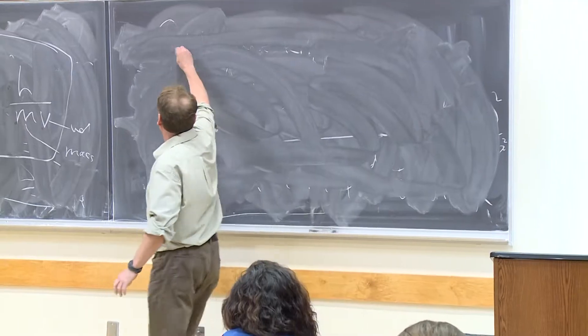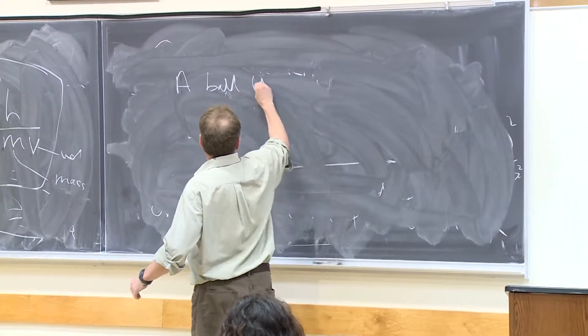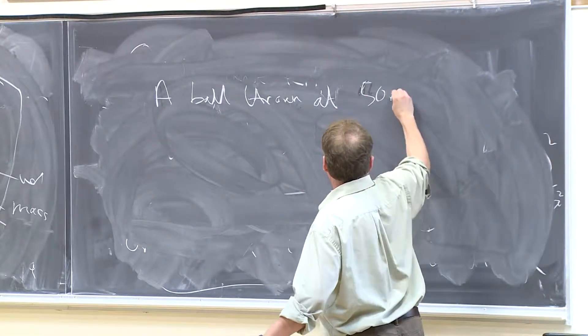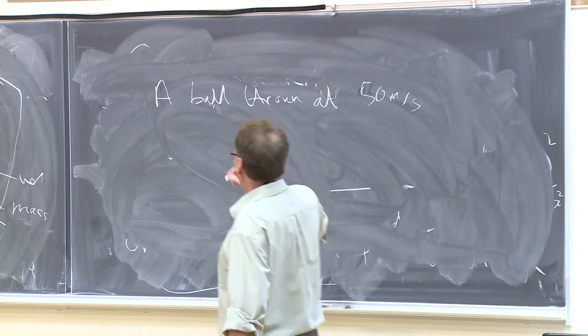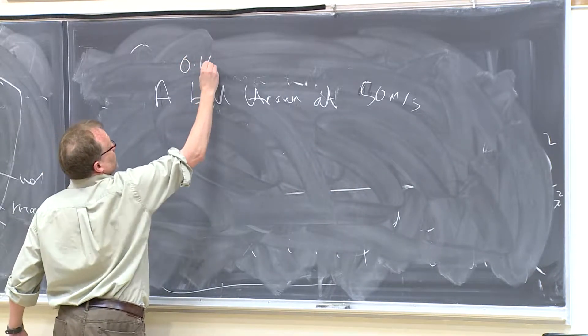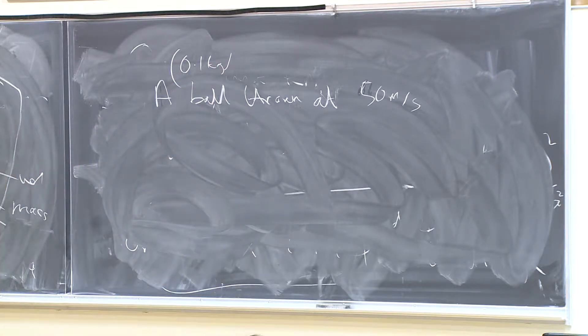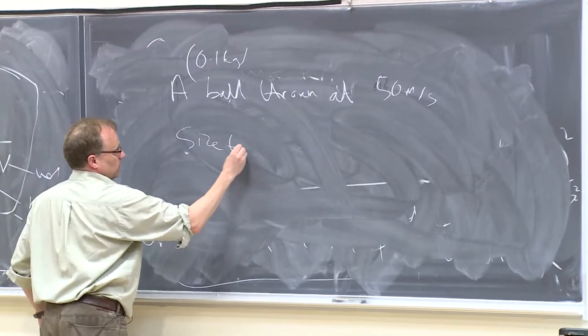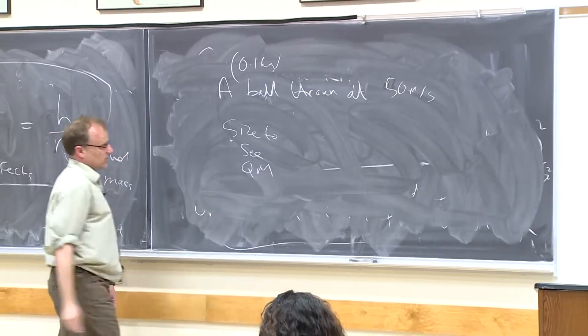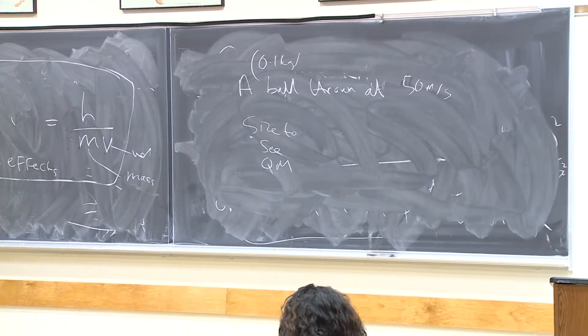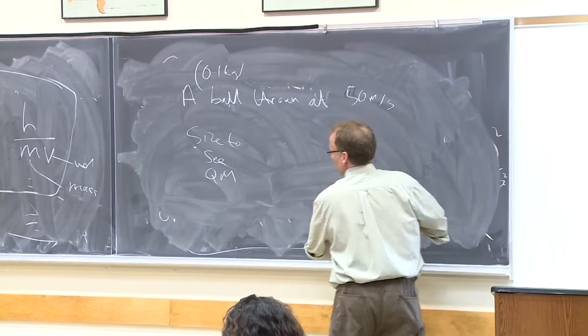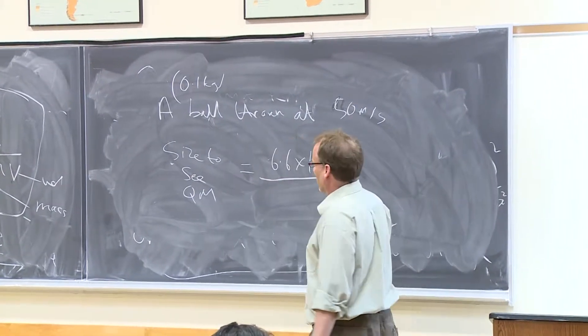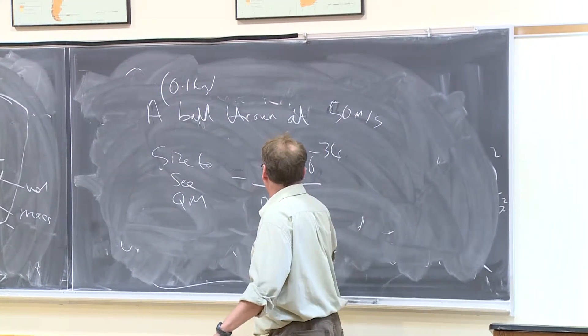Let's say you have a ball thrown at 50 meters per second, and the ball weighs 0.1 kilograms. Then the size to see quantum mechanical effects, in other words interference, diffraction, anything to do with waves, because the size that we're looking for will be 6.6 times by 10 to the minus 34 divided by 0.1 multiplied by 50.